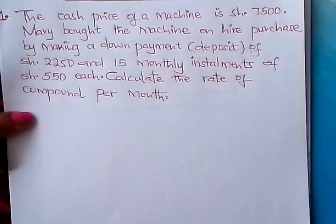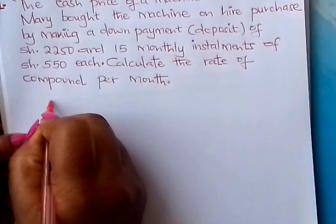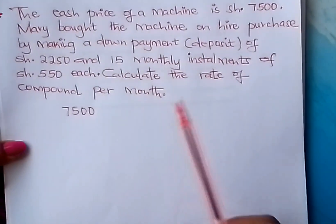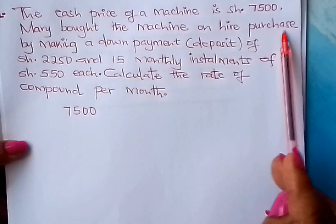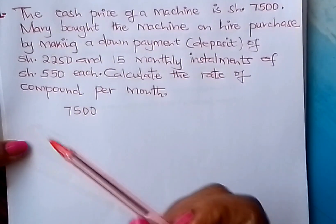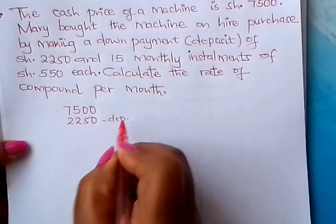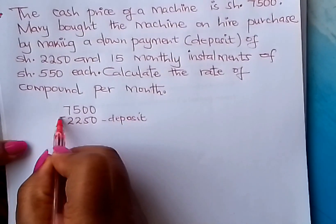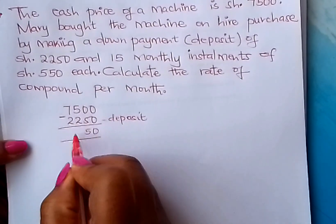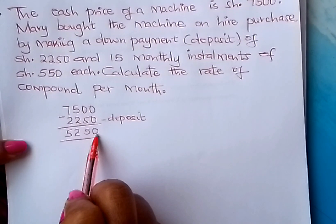So let us look at it now. We are told that the cash price of a machine is 7,500. Mary decided to buy this machine on hire purchase by making a down payment or deposit of 2,250. Mary paid 2,250 as deposit. And therefore, you subtract to get what she did not pay. Subtracting, you will get 5,250 shillings that she did not pay.